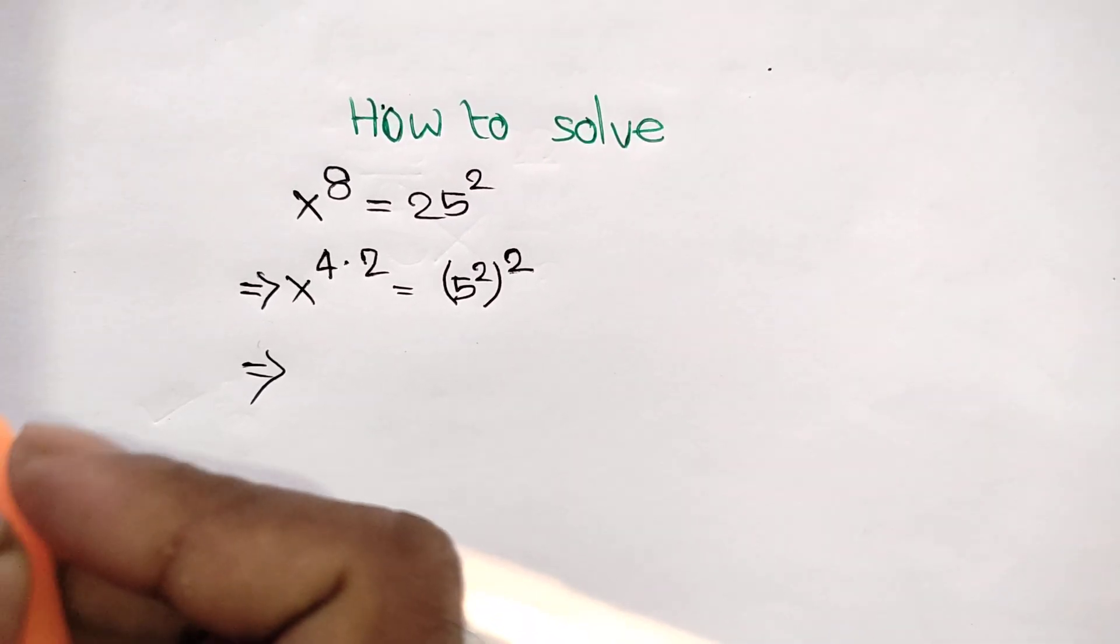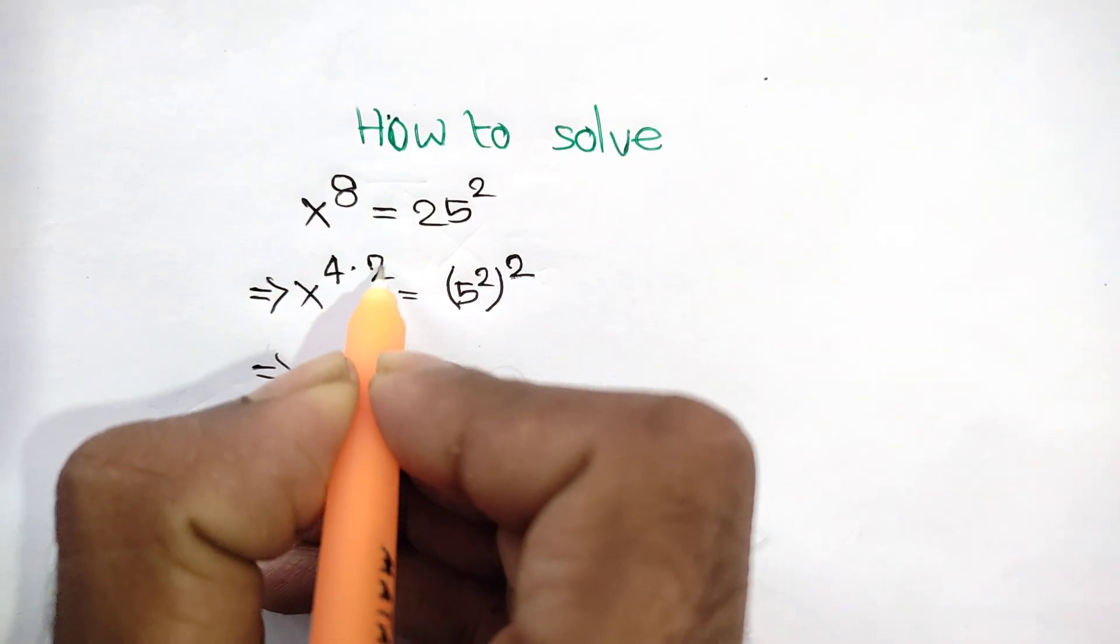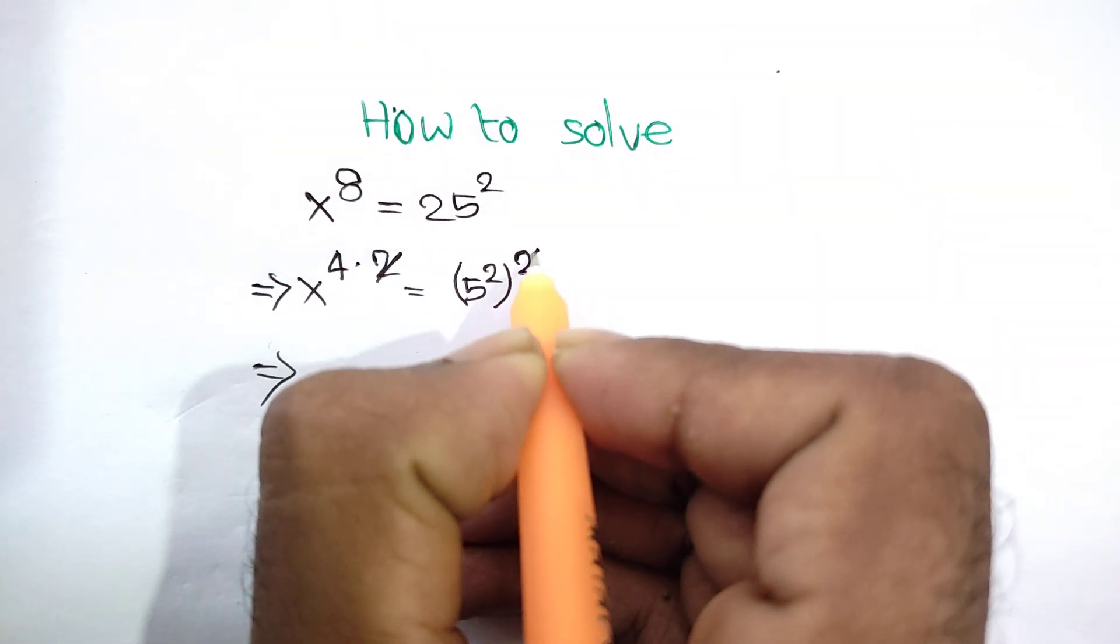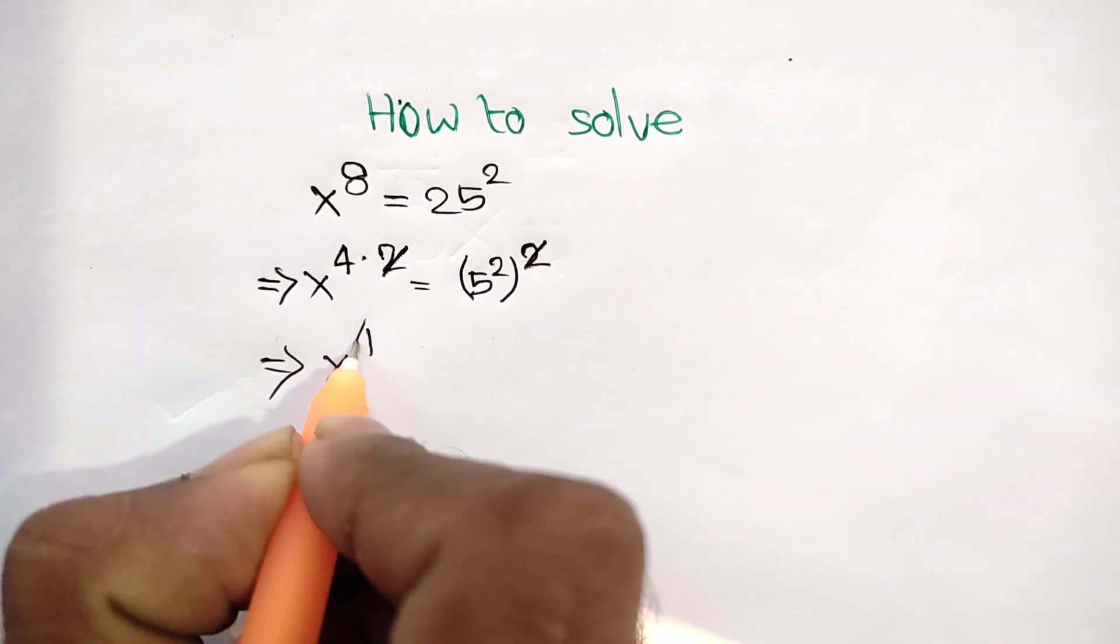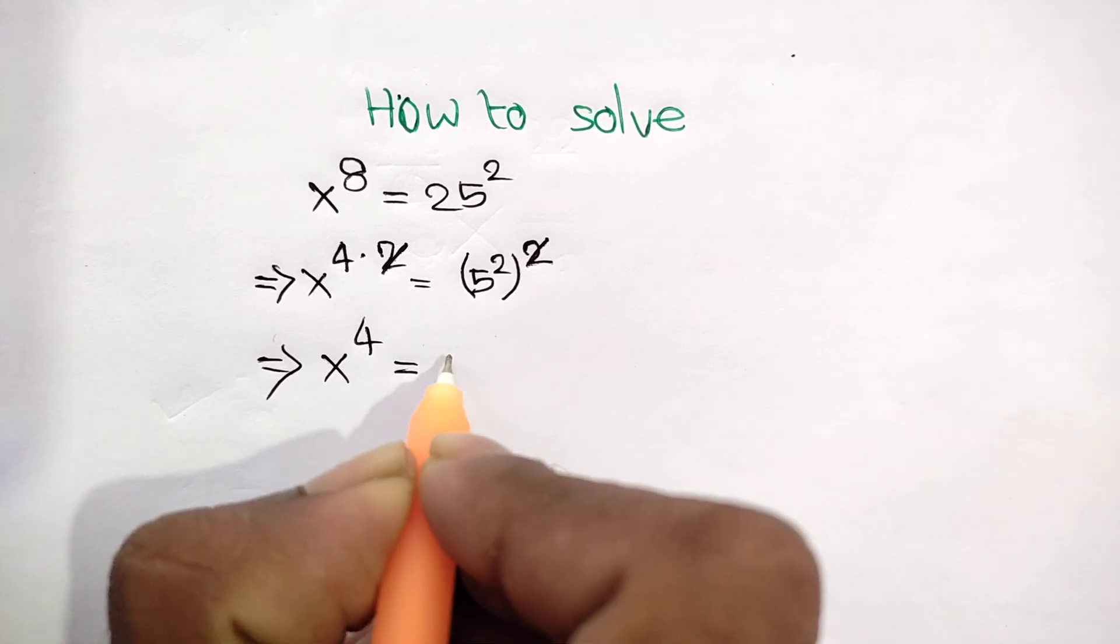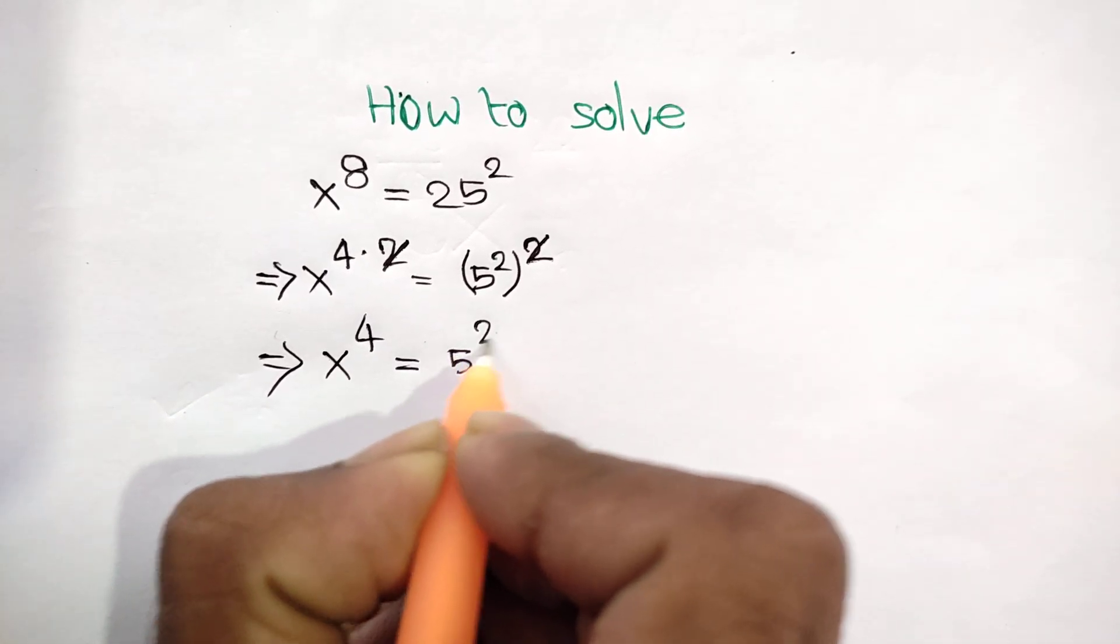Then power simplify this power 2, the same as this power 2. So we can write x to the power 4 is equal to 5 square.